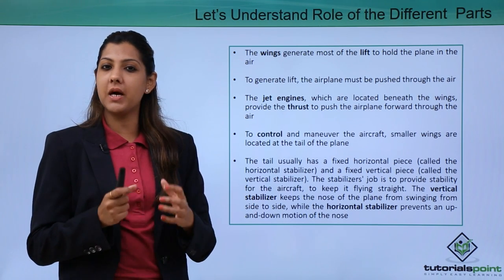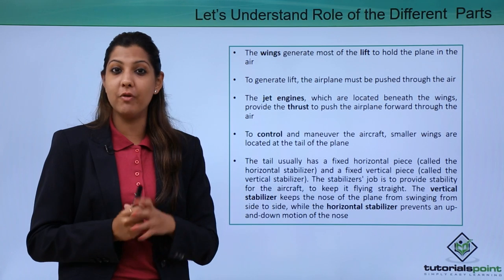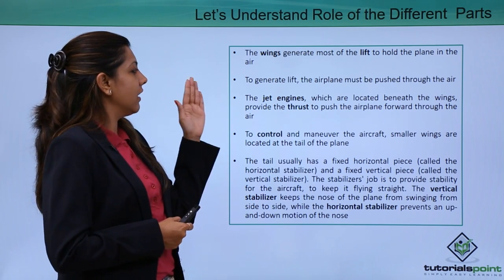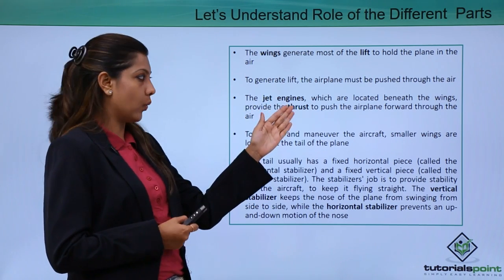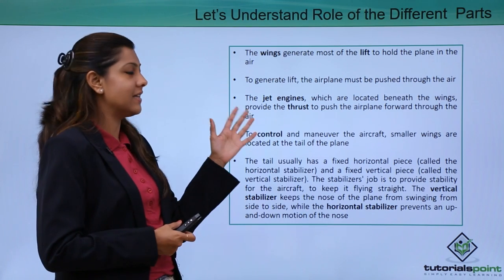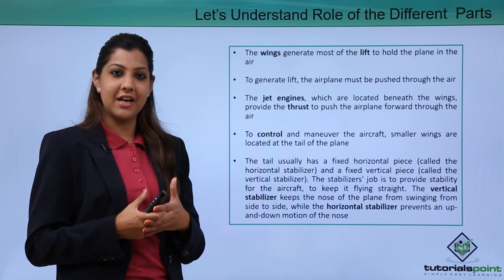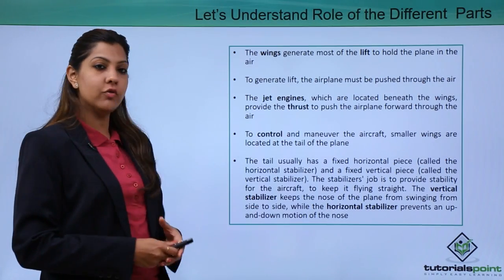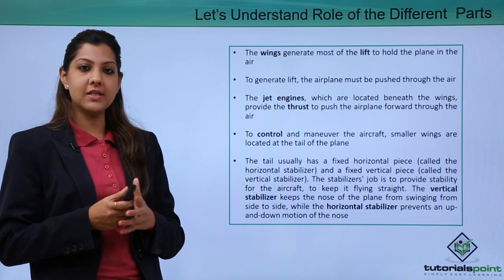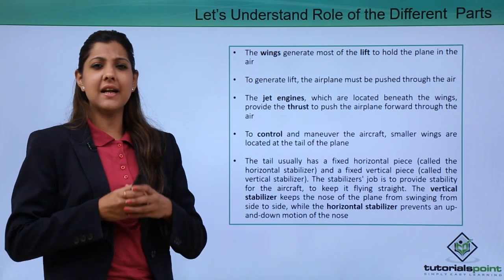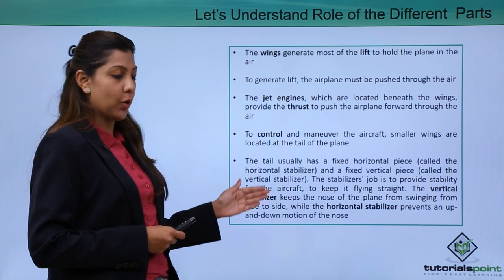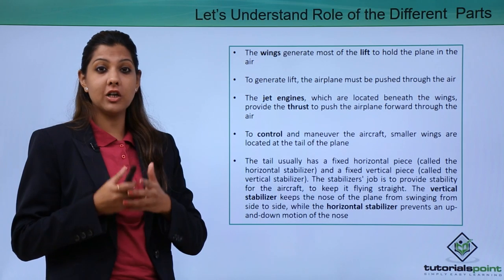The jet engines located beneath the wings provide the thrust to push the airplane forward through the air. To control and maneuver the aircraft, smaller wings are located at the tail of the plane. The tail has two parts: the vertical stabilizer and the horizontal stabilizer. The stabilizer's job is to provide stability for the aircraft, keeping it flying straight and maintaining balance.